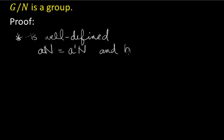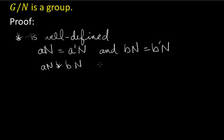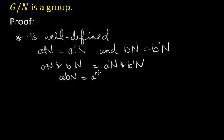And BN, another coset, could also be named by any element inside the coset. So we want to make sure that if these cosets are named differently — if a different element is standing on the outside — that we get the same thing if we apply star. We want to show that AN star BN is the same as A'N star B'N. So let's try to prove this.